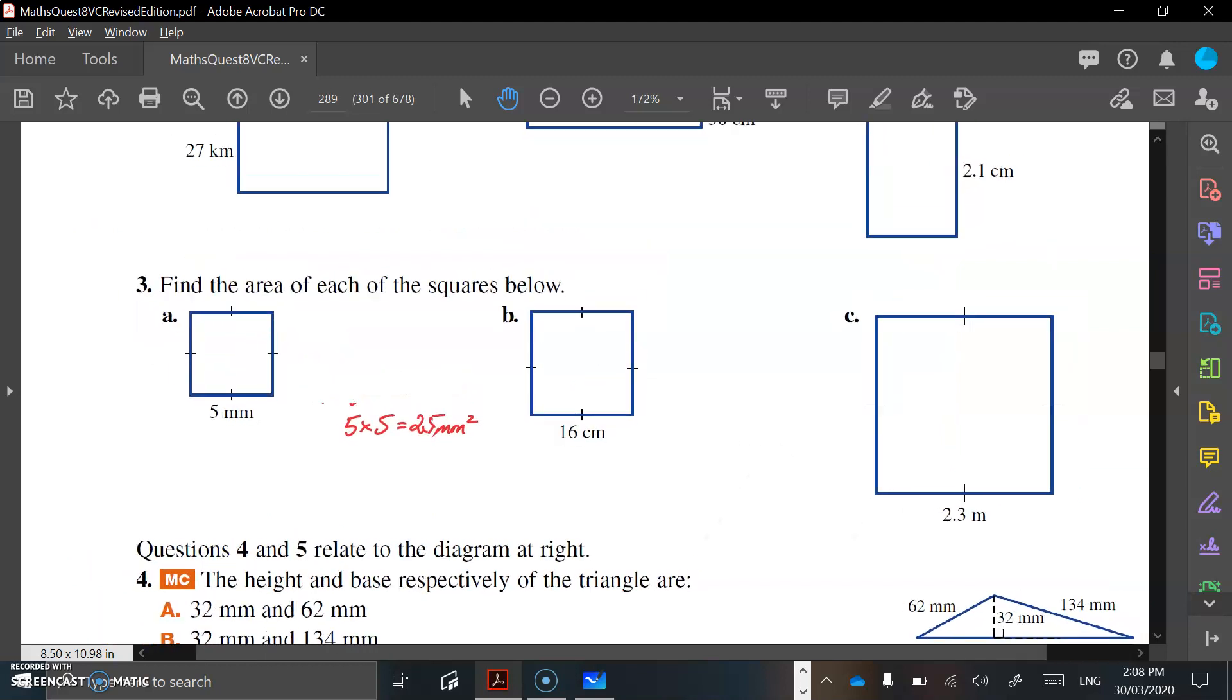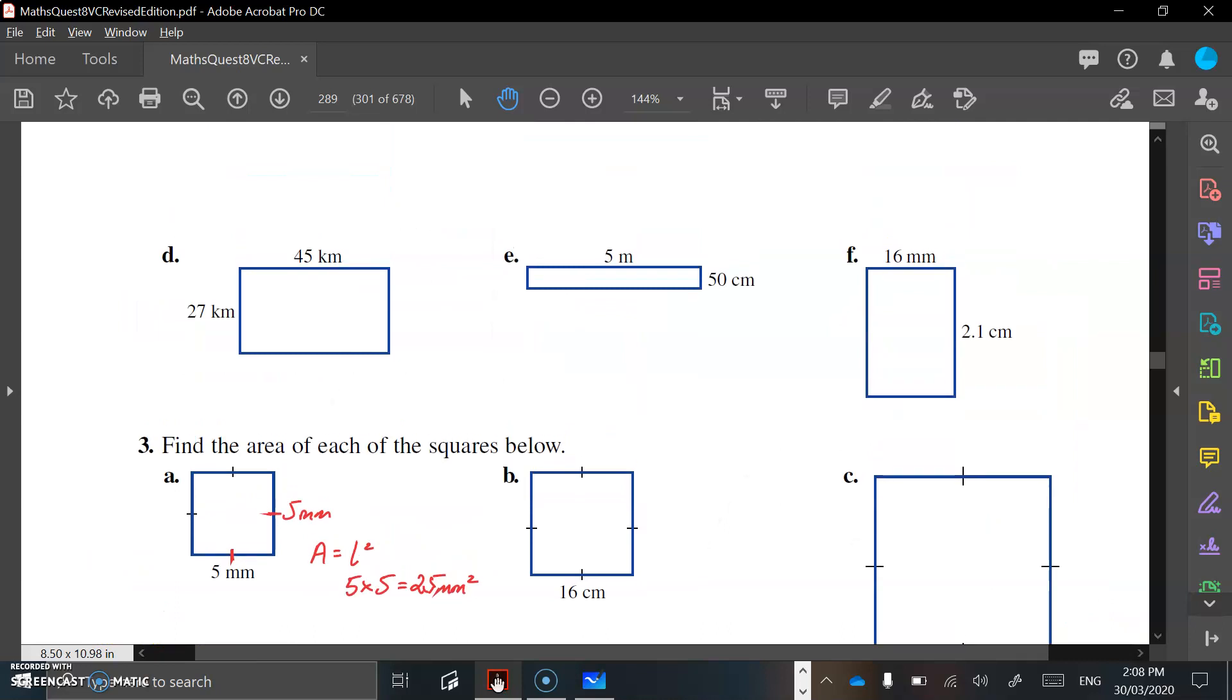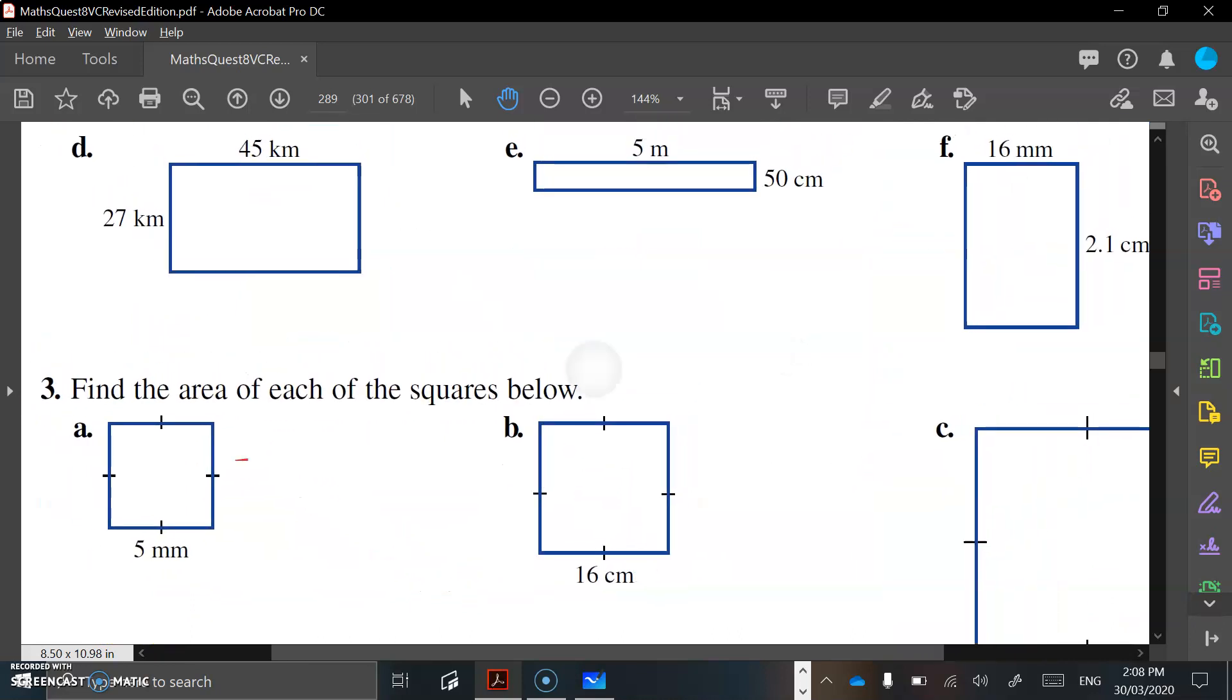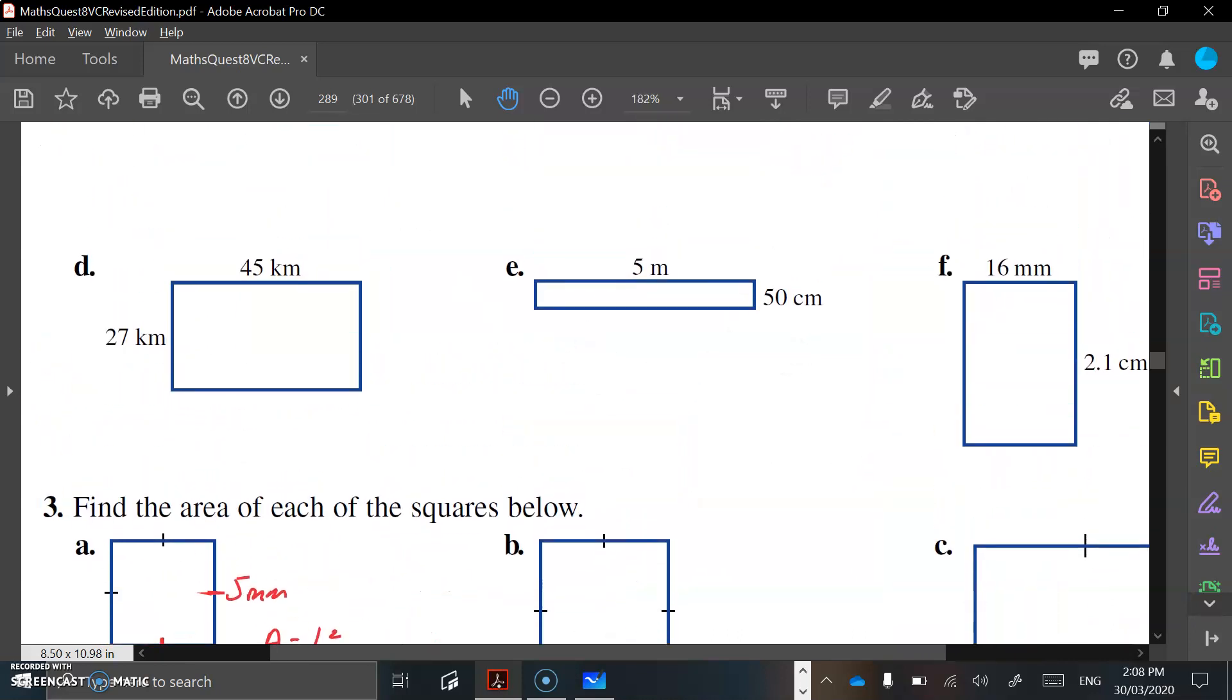If we move on to a rectangle, let's look at E. So this side is 5, that side is 50, but notice that the units of measurement are different. We can either convert this to 500 centimeters, so therefore it is the same as the other one.